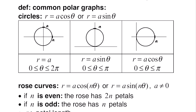Next we'll go over common polar graphs, starting with circles. The equation r = a gives a circle of radius a centered at the origin. For r = a·sinθ, the circle lies along the y-axis; if a = 4, the diameter is 4 and center is (0, 2). A negative a puts the circle below the x-axis. For r = a·cosθ, the circle lies along the x-axis; if a = 6, the diameter is 6 and center is (3, 0). A negative a shifts the circle to the left.